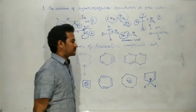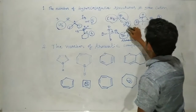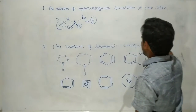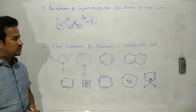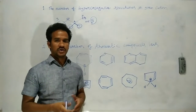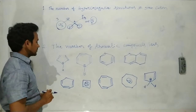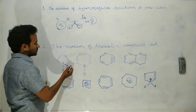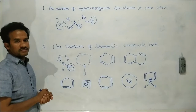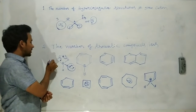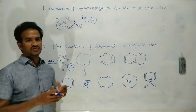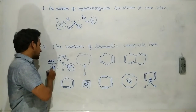Next question: the number of aromatic compounds or ions from the given structures. Aromatic compounds have continuous conjugation with 4n+2 pi electrons, where n = 0, 1, 2, 3, etc. The first compound contains boron with a vacant p orbital (sp2 hybridization), allowing conjugation. The continuous conjugation involves four pi electrons, which satisfies 4n (n=1). This is therefore an anti-aromatic compound.